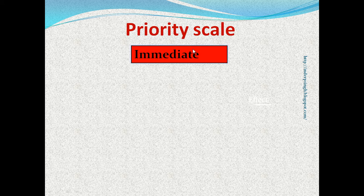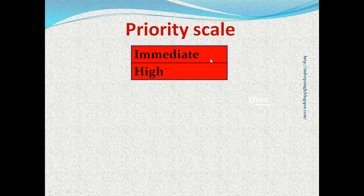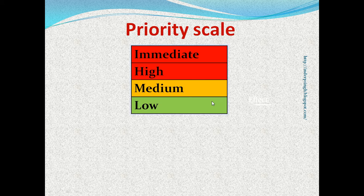The priority scale consists of priority levels like immediate. Examples of bug reports that have immediate priority are: the login functionality does not work, a major functionality does not work, or incorrect organization logo. The priority value can also be high, medium, or low.